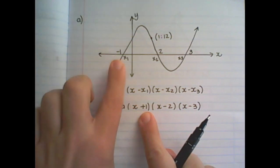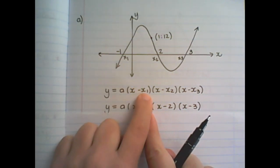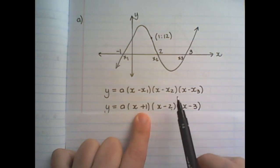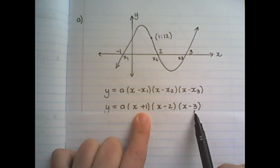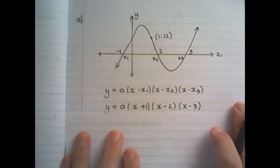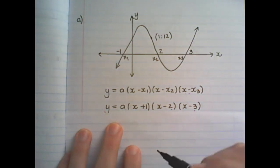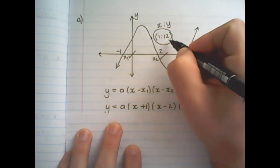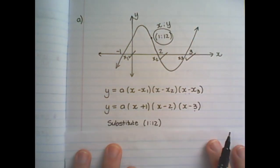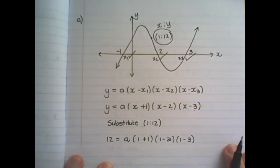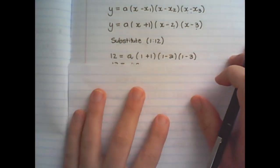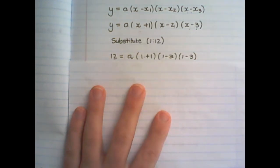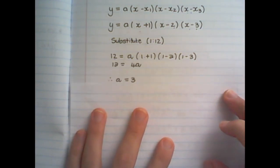Notice when I substitute a negative value in the place of x1, it is negative negative 1, and it will become plus 1. x2 is the value of 2, so it's x minus 2. And x3 is the value of 3, so it's x minus 3. Now don't multiply out yet — we first want to find the value of a. I've used x1, x2, and x3. Now I need to use the x and y values in the coordinate given to solve a. So I substitute the coordinate of 1 and 12 into the equation. The y value is 12 and all of the x's are replaced with 1. I simply multiply out and divide by 4, so the a value is 3.